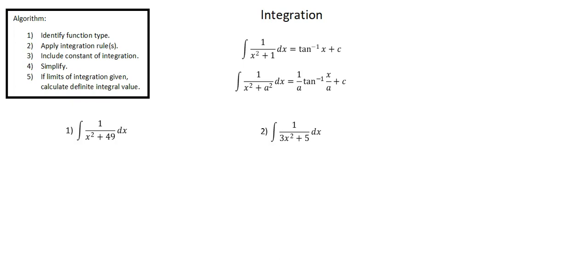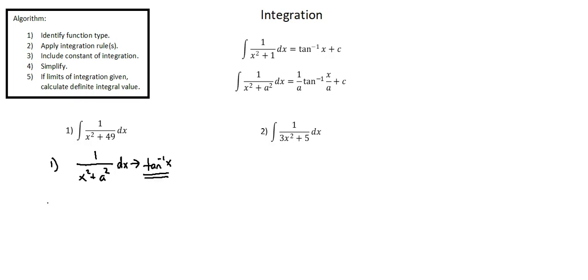Let's look at Example 1: the integral of 1 over x squared plus 49 with respect to x. Algorithm step one: identify function type. In this example, we see the general format of 1 over x squared plus a constant. That constant in this case is 49. We'll write it in the general term a squared. This tells us that we're dealing with an integral relating to the inverse tangent of x. So in step one, we've identified the function type as inverse tangent of x.